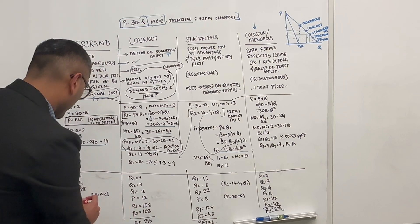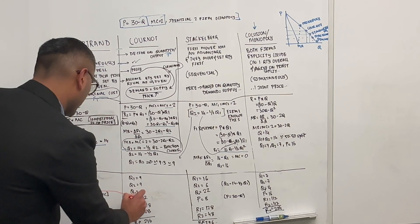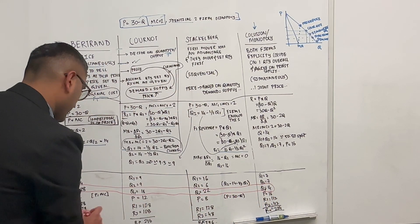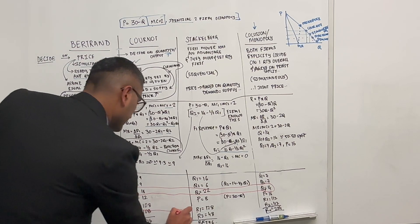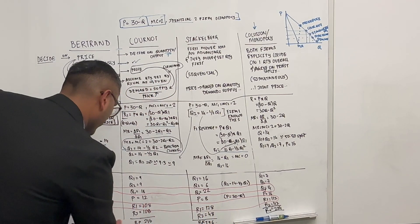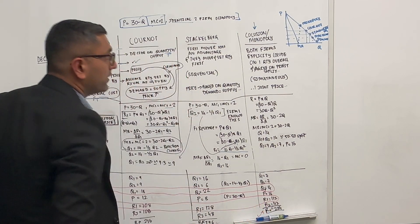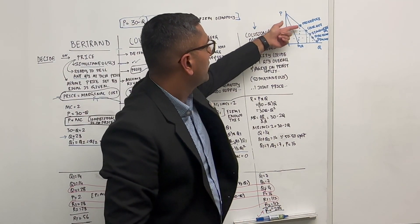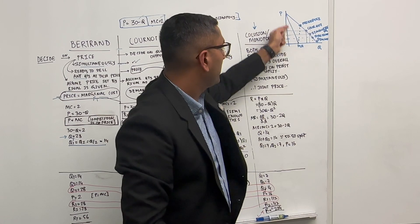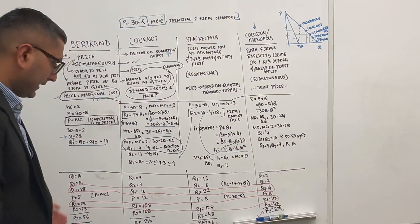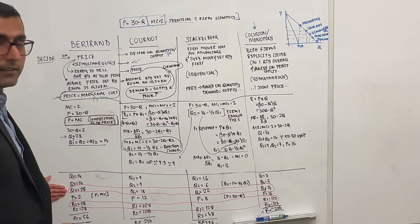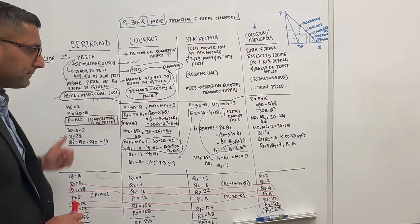Looking across all four models, we see a clear trend: total quantity goes down from Bertrand to Cournot to Stackelberg to Monopoly, while firm 1's revenue and total revenue go up. This shows how the competitive configuration directly affects price, quantity, and revenue outcomes. That's oligopoly with Bertrand, Cournot, Stackelberg, and complete collusion slash monopoly.